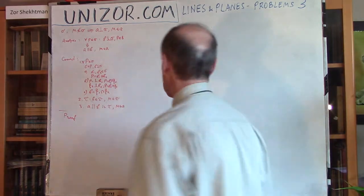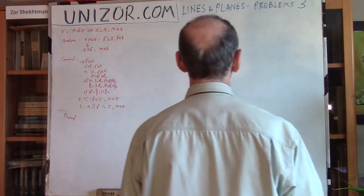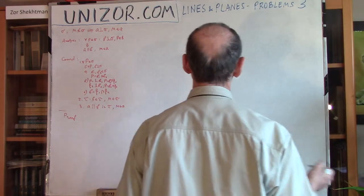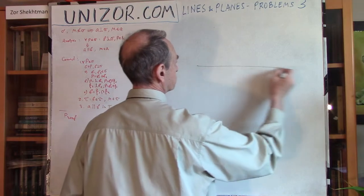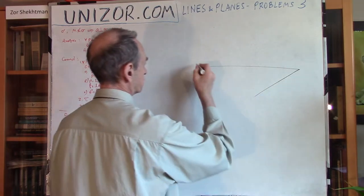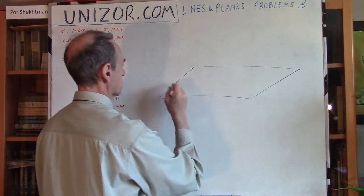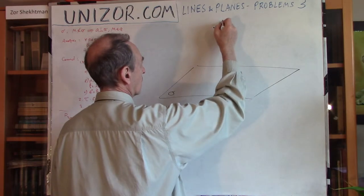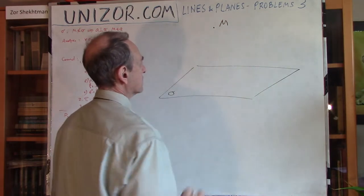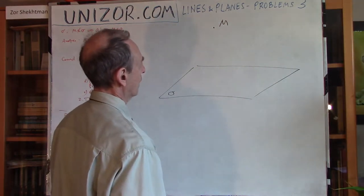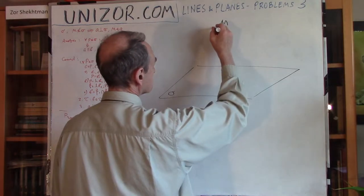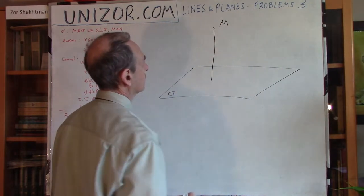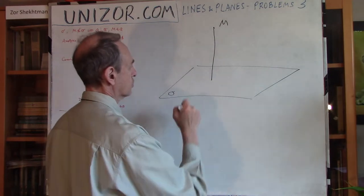Okay, so let's state the problem and try to solve it. What we have is a plane — let's call it sigma — and a point outside of this plane. What we need is to build a perpendicular line from this point to the plane.